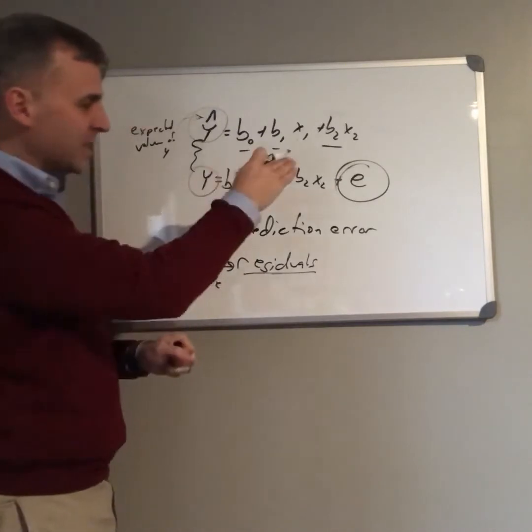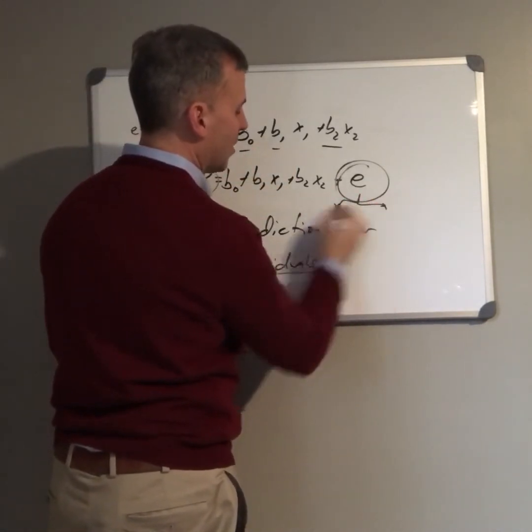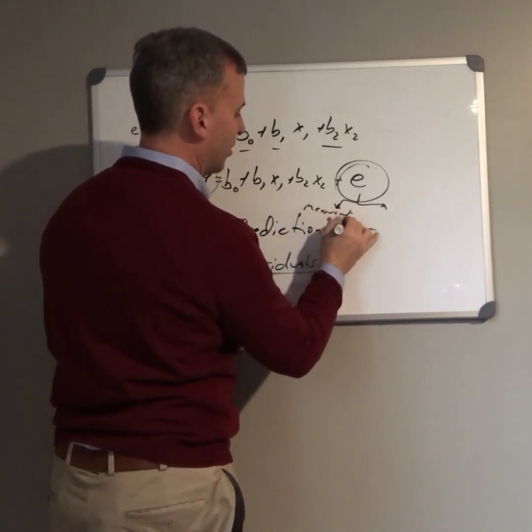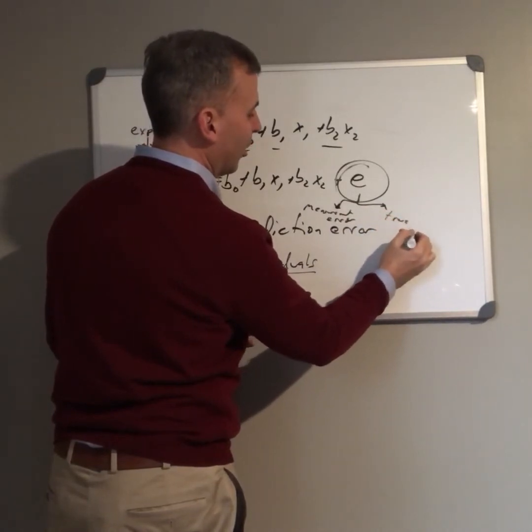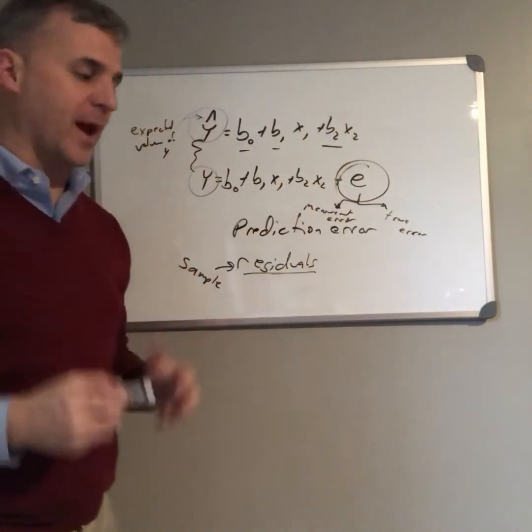Now here's another thing. This prediction error can be cut up into two things. Part of it is what we call measurement error, and part of it is what we call true error. So error has two components: measurement error and true error.